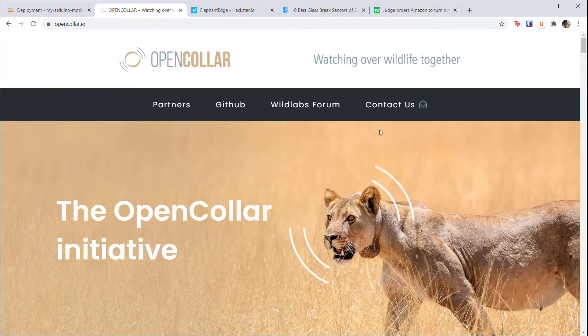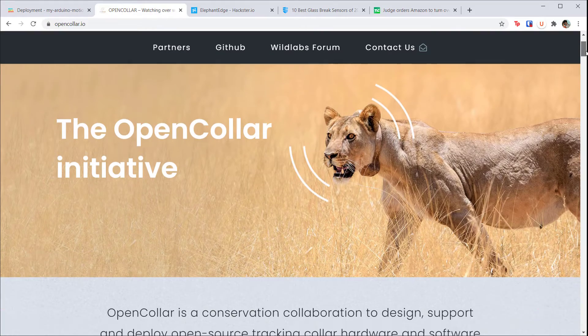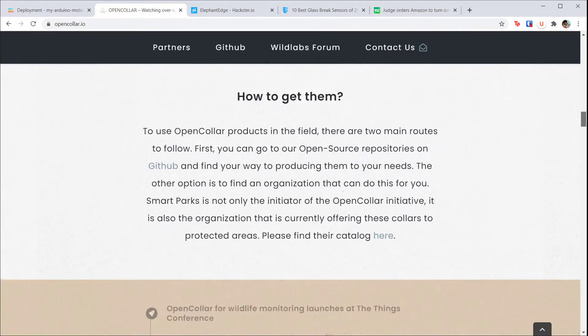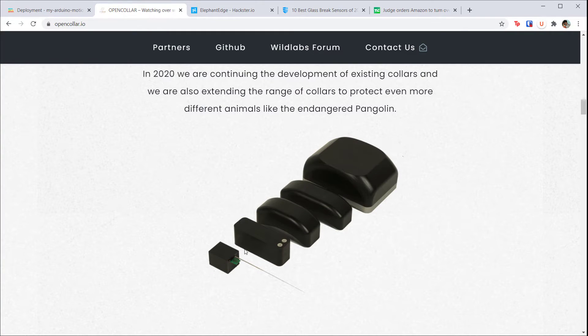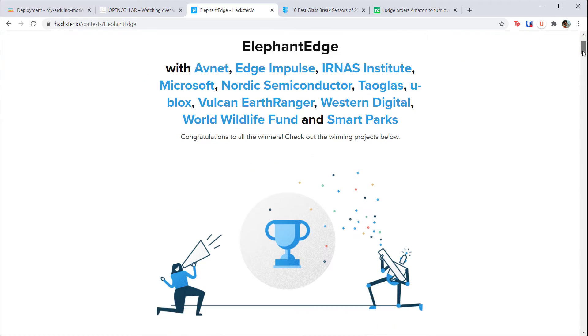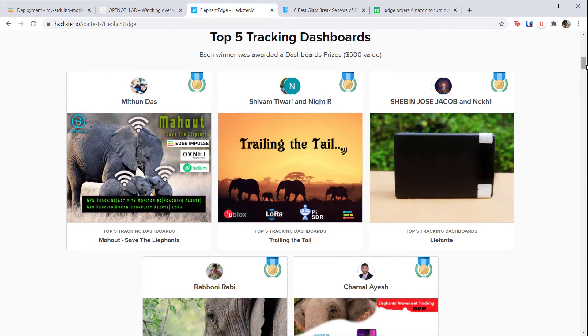For example, we could create a system that identifies various calls of different animals. The open collar is an open source wildlife tracking collar used by researchers and conservationists. Hackster, in partnership with Edge Impulse and others, ran a contest to develop the next elephant tracking collar.